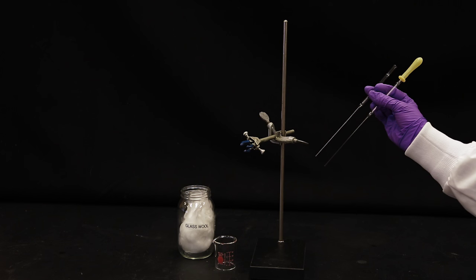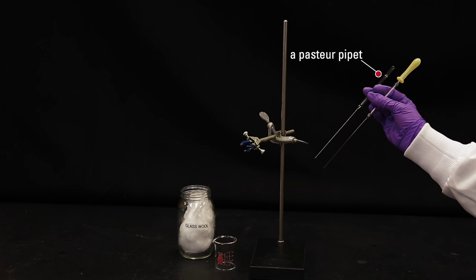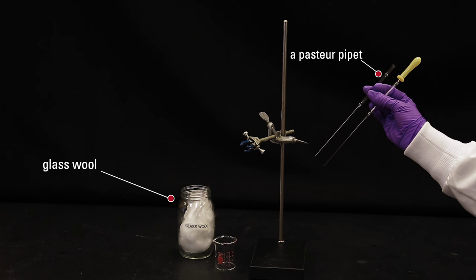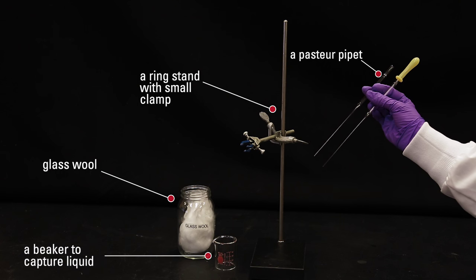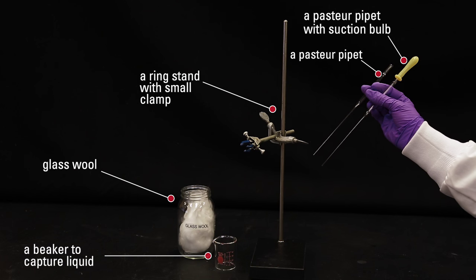To do this, you need a Pasteur pipette, glass wool, a ring stand with a small clamp to hold the Pasteur pipette in place, a beaker to capture liquid from the filtration pipette, and a second pipette with a bulb for suctioning.